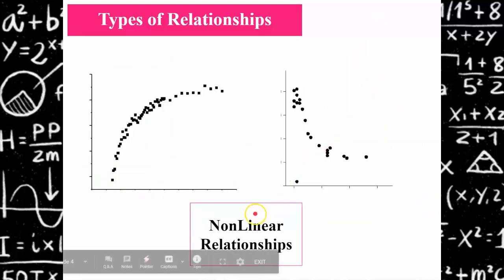You could also have a scatter plot that shows non-linear relationships. You'll learn about these more in Algebra 1. You can see that there's a curve, so they're non-linear because they don't form a line. These are special types of functions. This is part of a quadratic function, and this is part of an exponential function. You'll learn about those in Algebra 1.